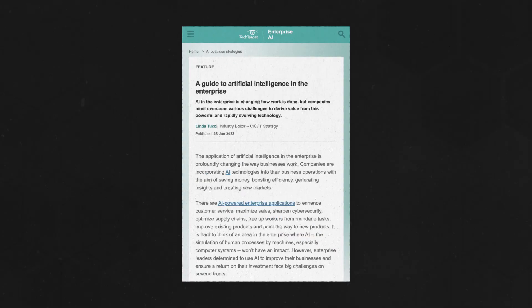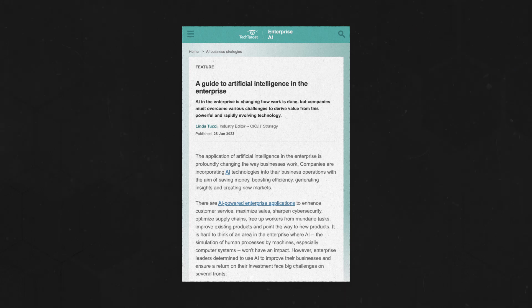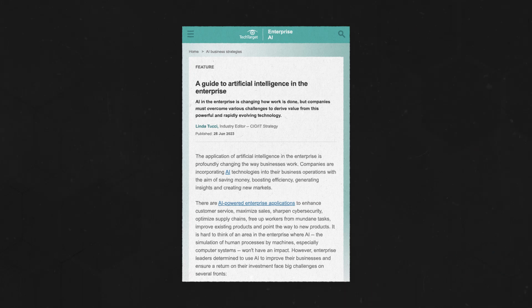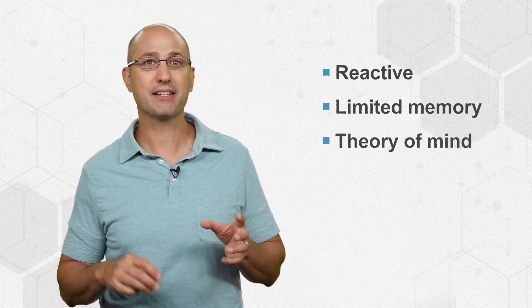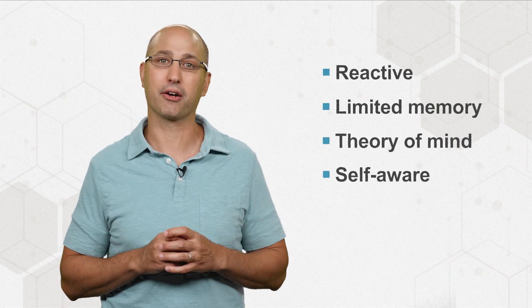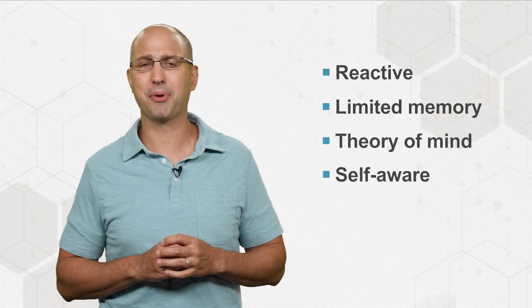For a deeper dive into the benefits of AI in the enterprise, explore our guide by clicking above or in the description below. And remember to subscribe for more videos on AI and emerging tech. You can sort AI into four categories: reactive, limited memory, theory of mind, and self-aware. Let's talk about each.